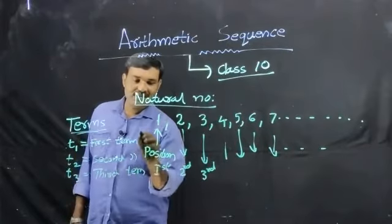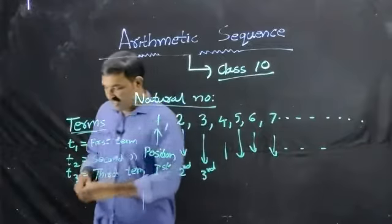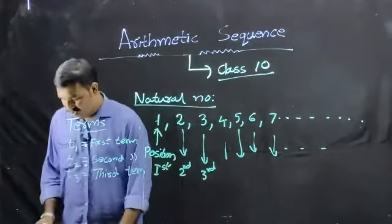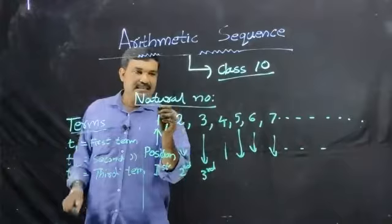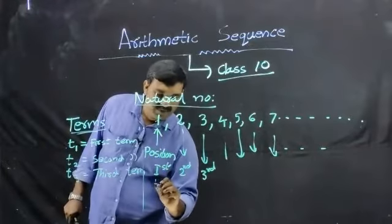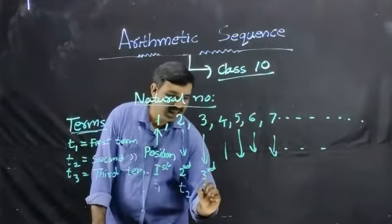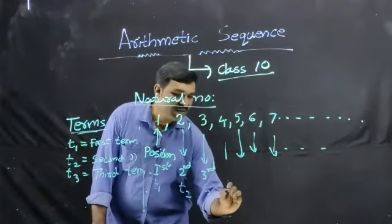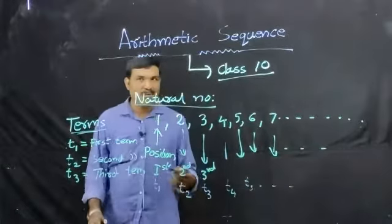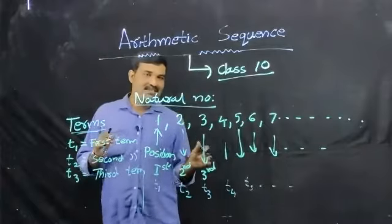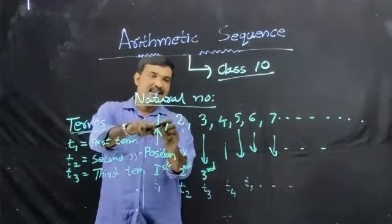So we can call these the terms. The first term is denoted by t1, so t1 is our first term of the sequence and t2 is the second term, similarly t3 is the element in the third position, also called the third term. So we can say our sequence has first term, second term t2, third term t3, fourth term, fifth term, and so on.